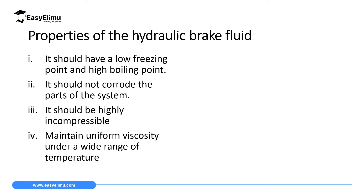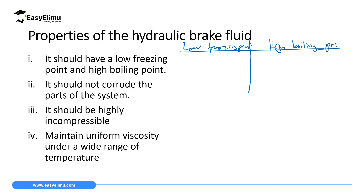The hydraulic fluid used in hydraulic machines must have specific properties. The first property is that it should have a low freezing point and a high boiling point. A low freezing point prevents the fluid from changing to a solid — if the freezing point were high, it could solidify easily and the brakes would not work, since the machine requires a liquid. A high boiling point prevents the fluid from changing to a gas.